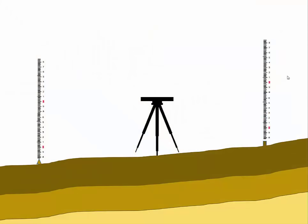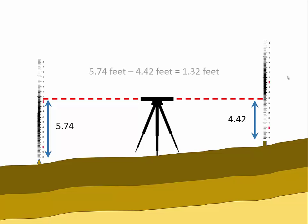Now here's an important distinction. The reading we take on this type of level rod is not an elevation. It is merely a vertical distance between our instrument line of sight and the surface on which the rod sits. By taking two rod readings we can find the difference in elevation between two points. In this case that elevation difference is 1.32 feet.